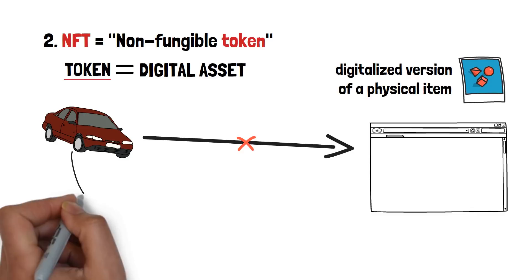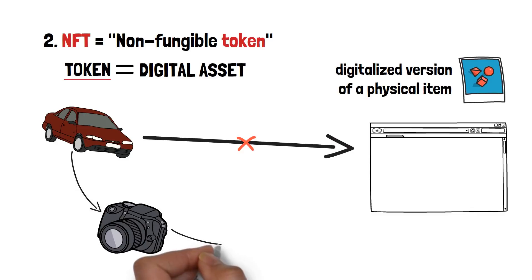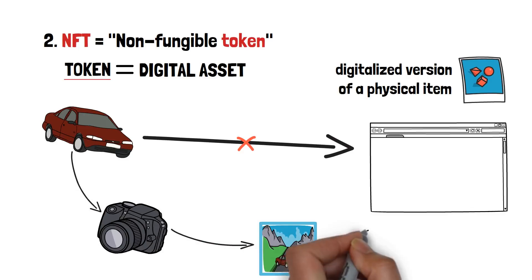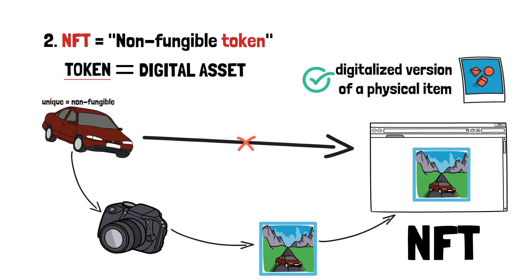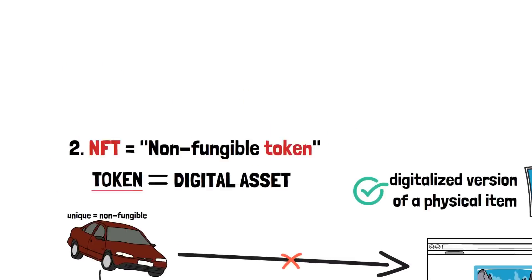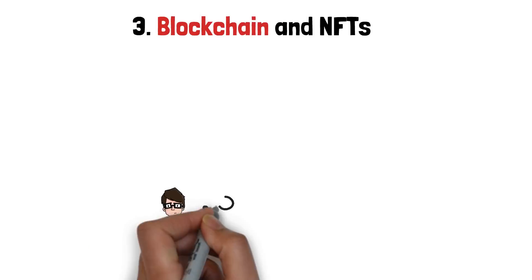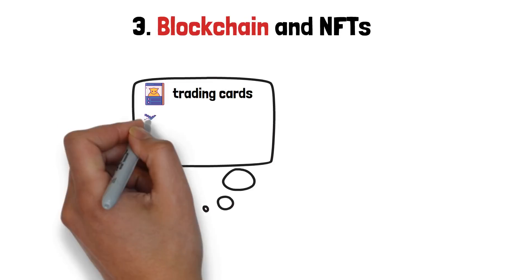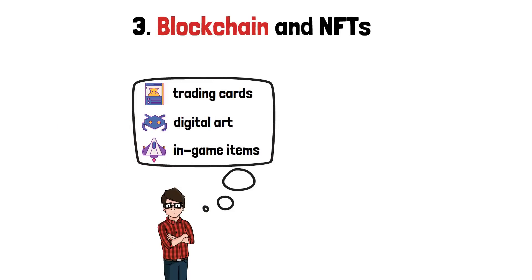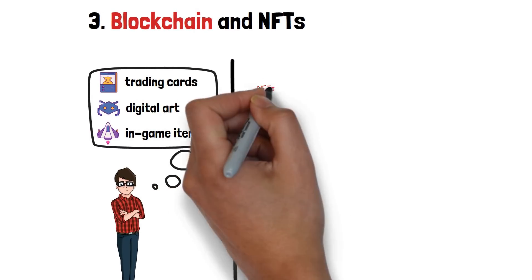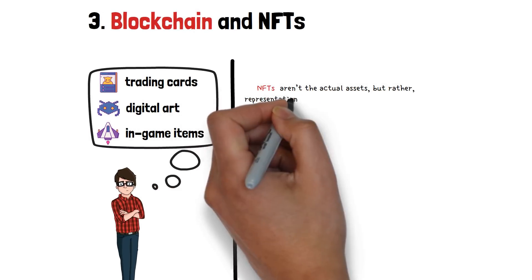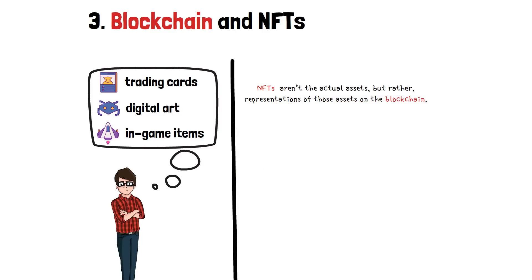Continuing with the car example, let's imagine you have taken a picture of your car and later created a digital token out of it. This would be the NFT of your car. It's non-fungible since it's unique, and it's a token since it's not the actual car but rather a digital representation of it. Most people associate the term NFT with trading cards, digital artwork, or in-game items or characters. It's important to understand that the NFTs themselves aren't the actual assets, but rather representations of those assets on the blockchain.